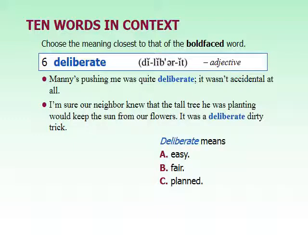This next one is deliberate, and this is an adjective. One thing to discuss is the pronunciation of words ending in A-T-E. This word is deliberate — pronounced with an 'it' sound at the end. There's another word spelled the same way, 'deliberate,' where the end is pronounced like 'eight,' and that is a verb. Generally, when something ends in an 'eight' sound, it's a verb; when it ends in an 'it' sound, it's an adjective or noun.